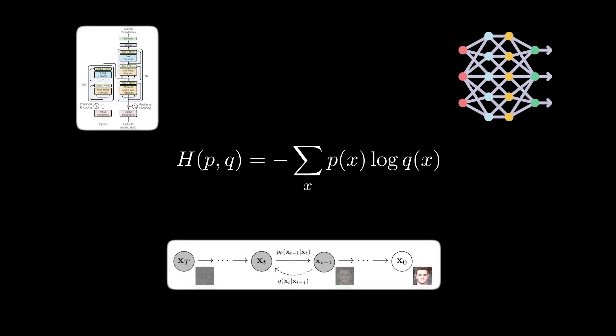Cross entropy. This simple loss function is used in transformers, diffusion models, neural networks, pretty much all ML models you will ever encounter.